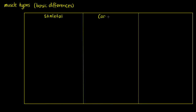Let's start with the obvious part: they each have different names. We have skeletal, cardiac, and smooth, and they're all going to look quite different structurally as well.